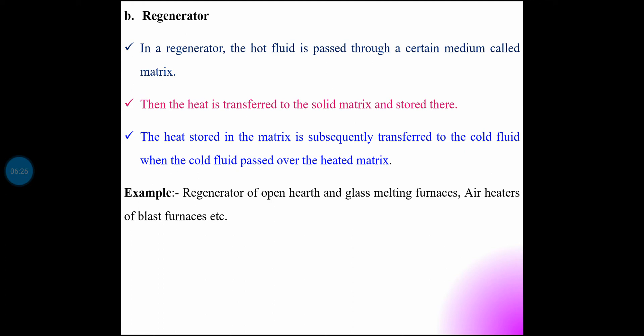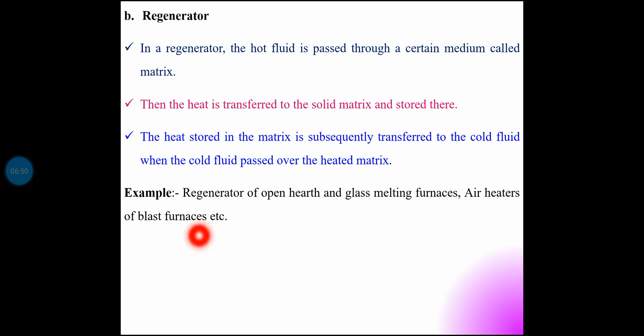The hot fluid heats the matrix, and then the cold fluid receives heat from the matrix — that is the heat transfer process. This intermittent operation means the matrix is alternately heated by the hot fluid and then transfers heat to the cold fluid. This is the regenerator. Examples include regenerators of open-hearth and glass melting furnaces, and air heaters of blast furnaces.